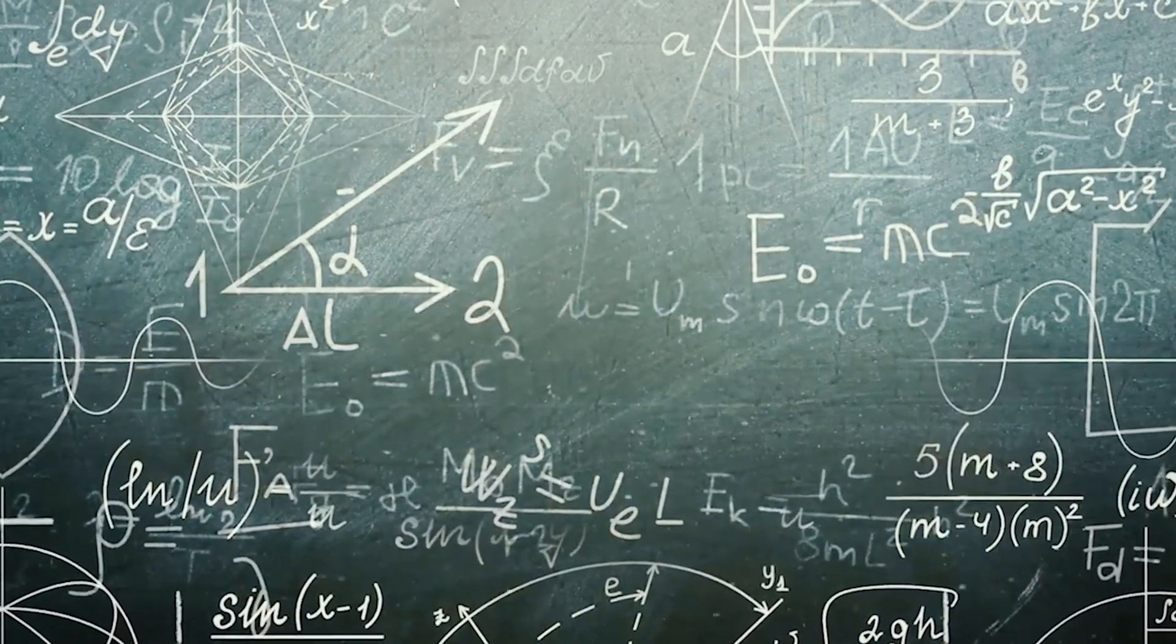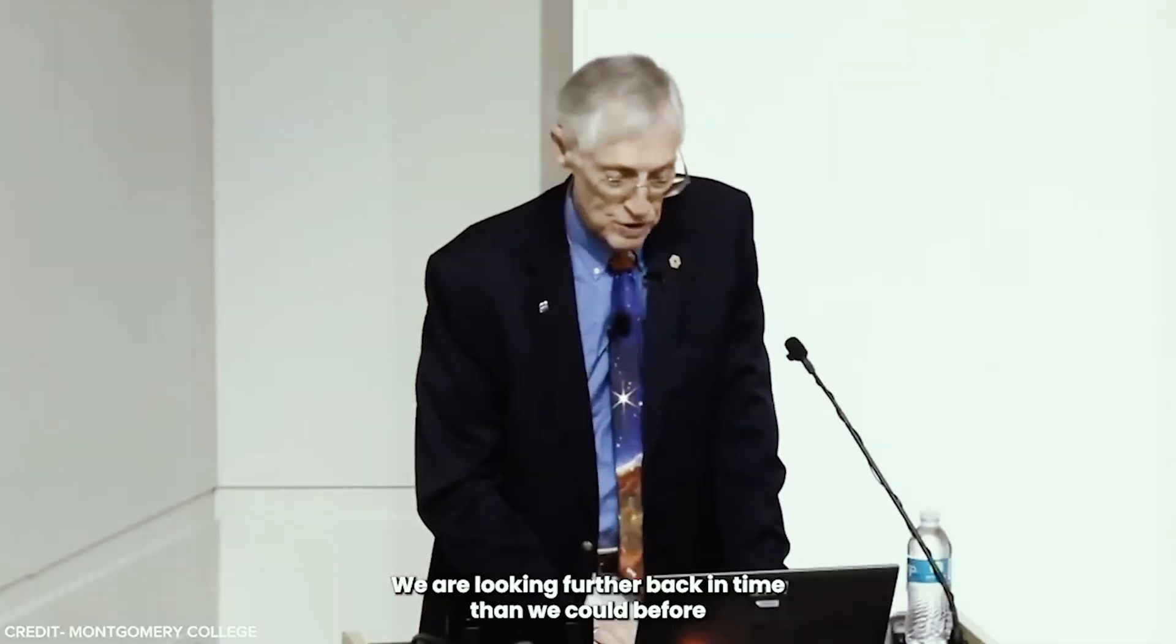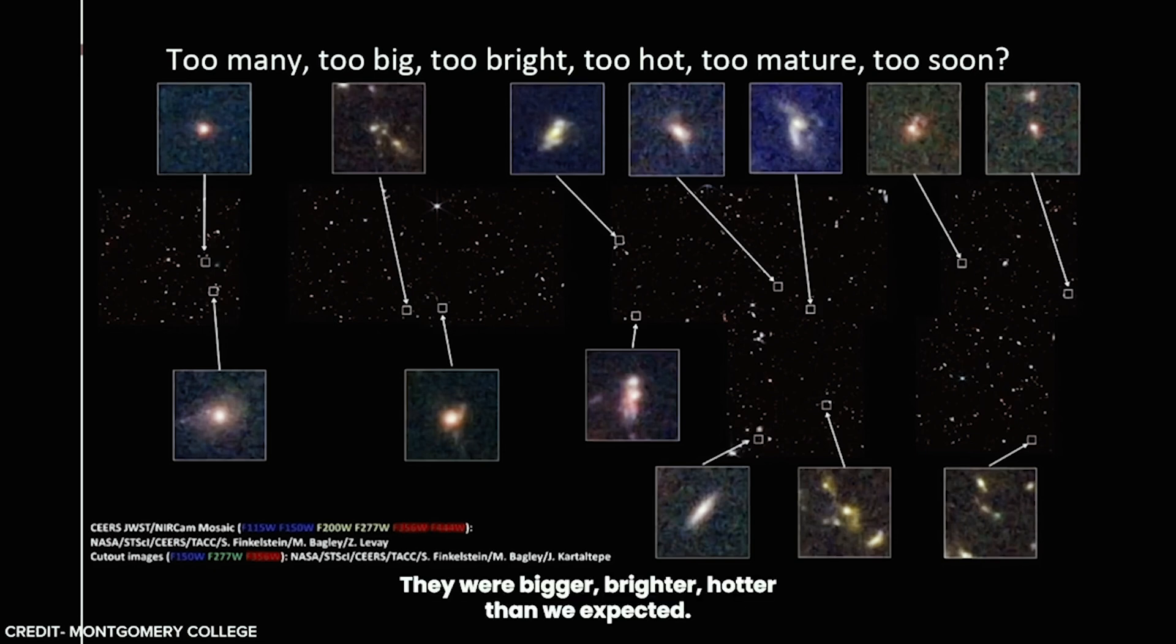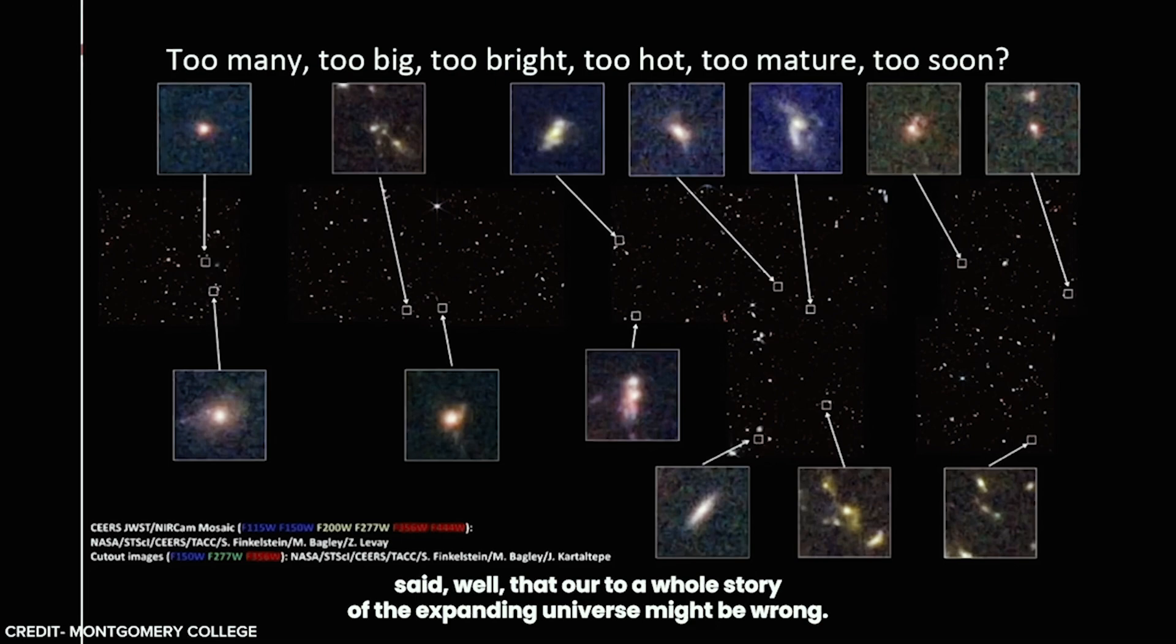And why has our science failed? Nobel laureate Dr. John C. Mather, the lead project scientist for the Webb telescope, put it in a nutshell at a press conference: "We are looking farther back in time than we could before and we are really thrilled with this picture. We have been working on the story of how the galaxies grew. I told you we were going to see the first ones growing and we saw some and they were a big surprise. They were bigger, brighter, hotter than we expected. Some people said that our whole story of the expanding universe might be wrong and I think more likely our story of how the stars grow is wrong."